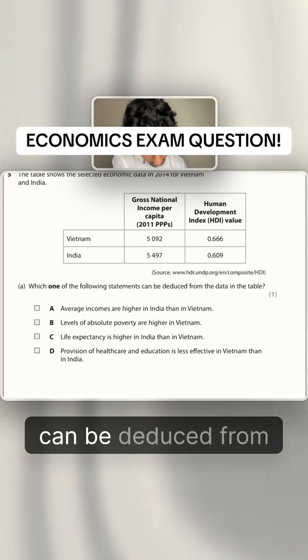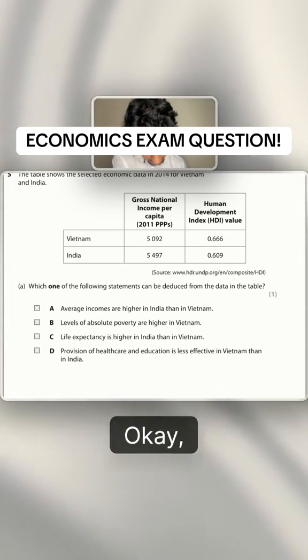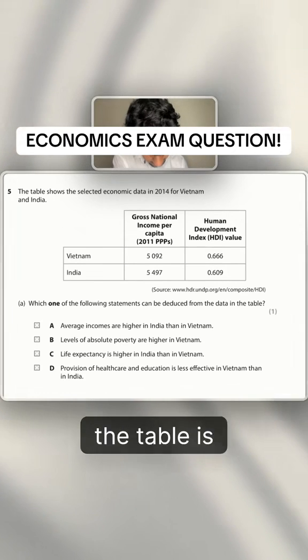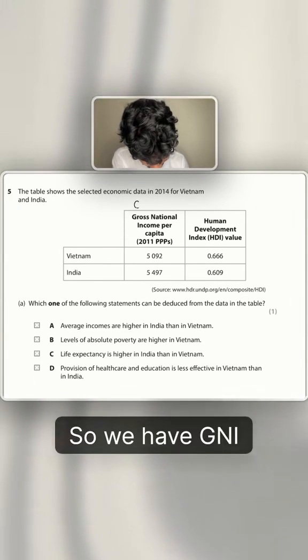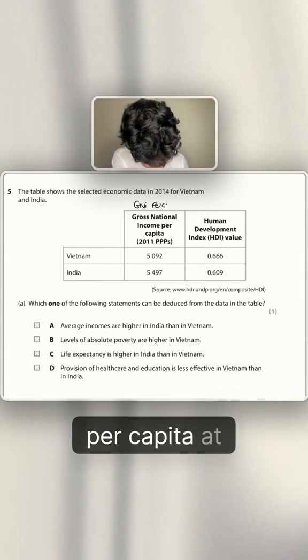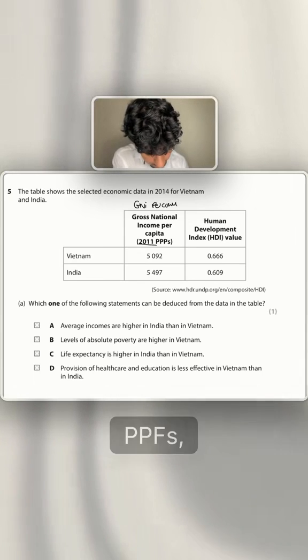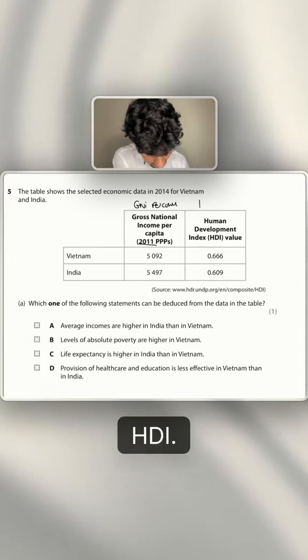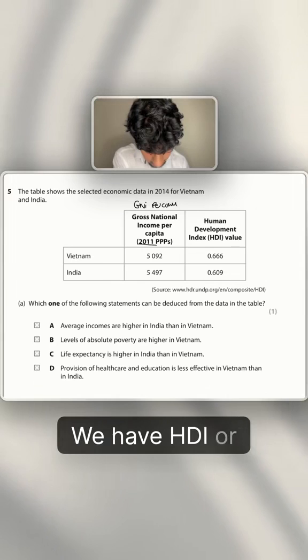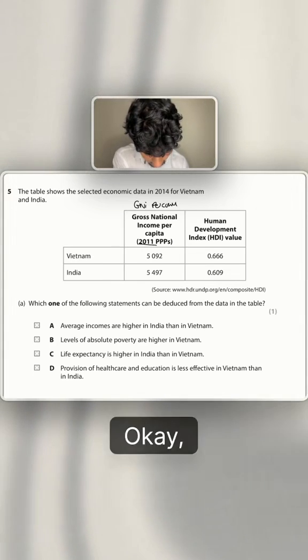Which of the following statements can be deduced from the data in the table? Let's now have a read on what the table is actually telling us. We have GNI per capita at 2014 PPP and then we have HDI. So we have GNI and HDI of Vietnam and India.